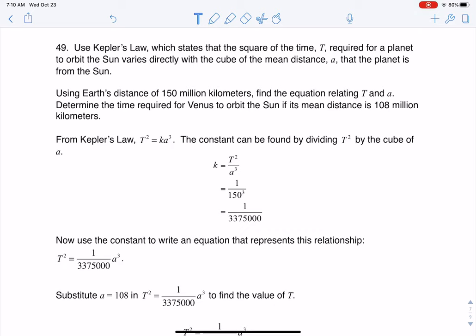It's giving us that Kepler's law states that the square of the time, t, required for a planet to orbit the sun varies directly with the cube of the mean distance a that the planet is from the sun. And then we're given that Earth's distance of 150 million, or use Earth's distance of 150 million kilometers to find t and a, and then we're going to go ahead and figure out the orbit time for Venus, which is a little bit closer to the sun as compared to Earth.